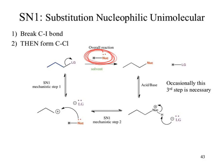Which step is the rate-limiting step? The first step. So the rate equals k times the concentration of reactants in that first step. How many reactants are in the first step? Just one — the substrate. That means first-order reaction, unimolecular. That's where 'SN1' comes from.